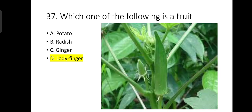Number 37: Which one of the following is a fruit? The answer is ladyfinger. All other three options are not fruits — both potato and ginger are modified underground stems, while radish is a modified root. So ladyfinger, which grows above the ground, is a type of fruit.